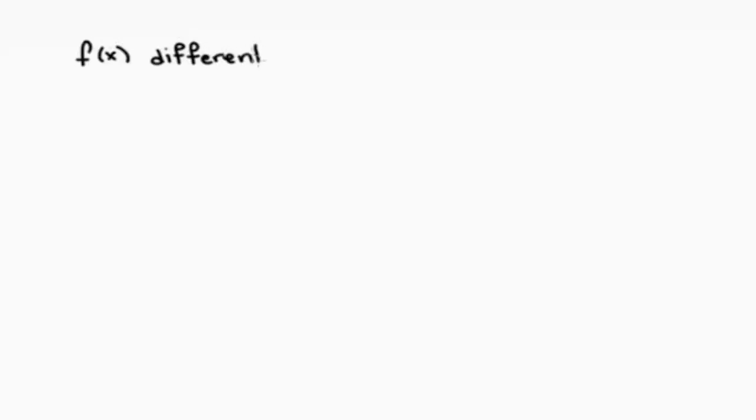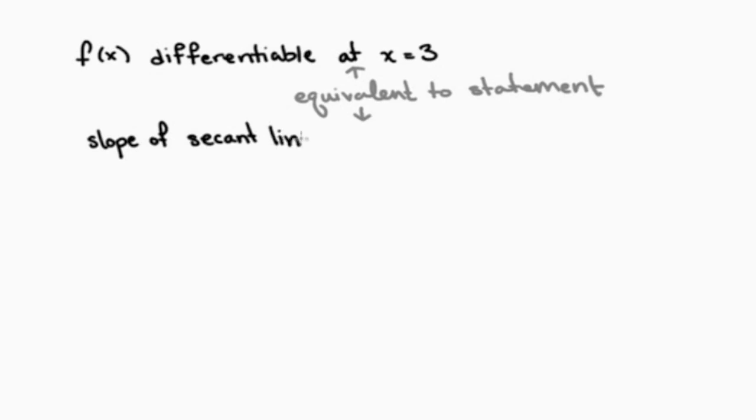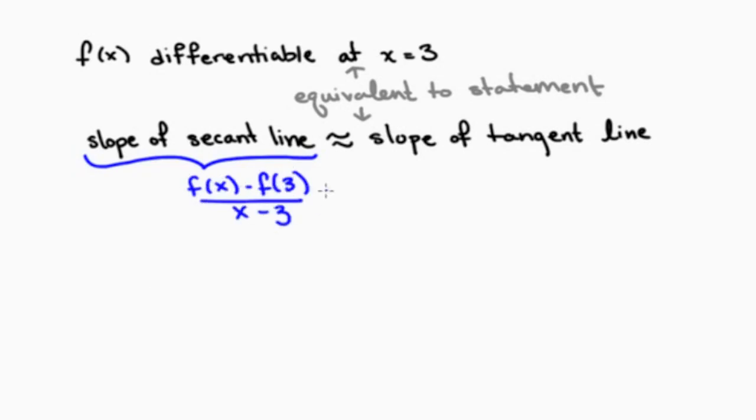Our function is differentiable at a point, say x=3. This is equivalent to the statement that when x is near 3, the slope of the secant line is approximately equal to the slope of the tangent line. That is, for x near 3, [f(x) - f(3)]/(x-3) is approximately equal to the value of the derivative at 3.